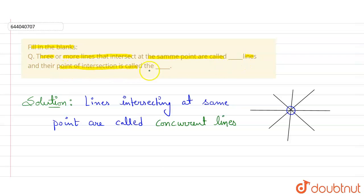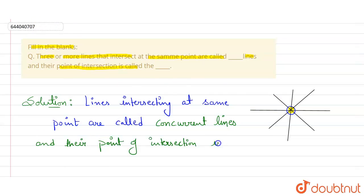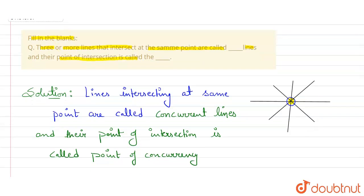For the second blank — their point of intersection — the point where all the lines intersect is called the point of concurrence, also known as the point of concurrency. So the answer for the second blank is point of concurrency.